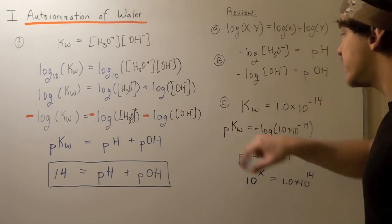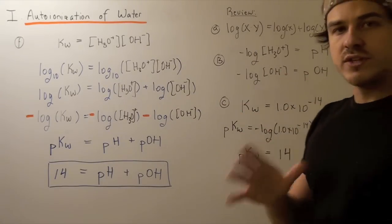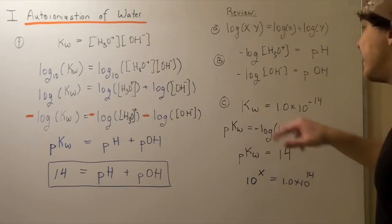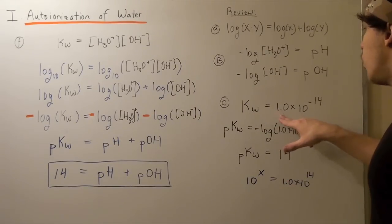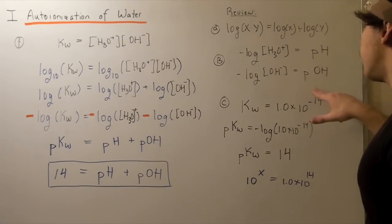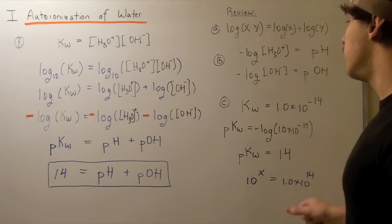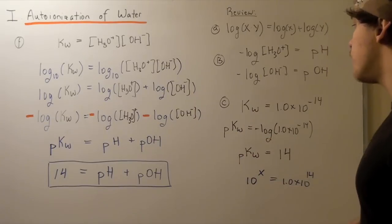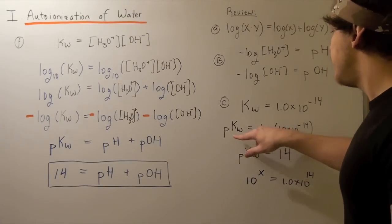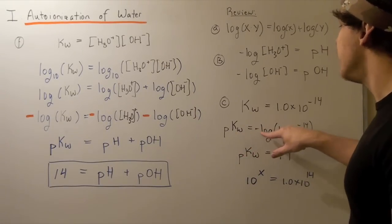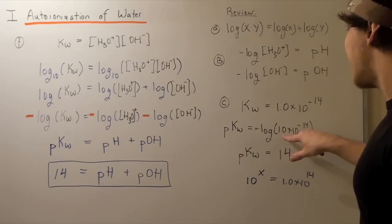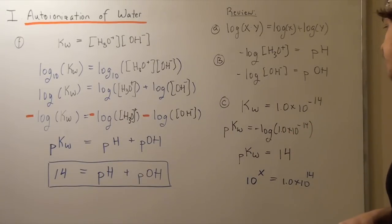In part C, remember, at 25 degrees Celsius, our Kw will always be 1.0 times 10 to negative 14. If we want to take the pKw, we simply write pKw is equal to negative log of 1 times 10 to the negative 14.